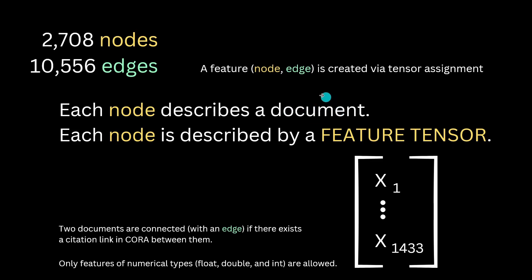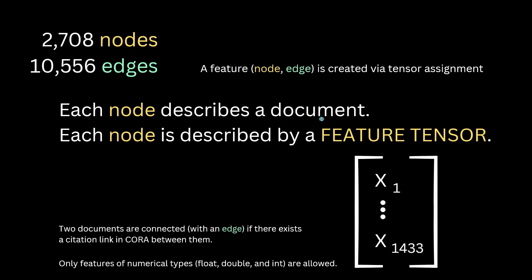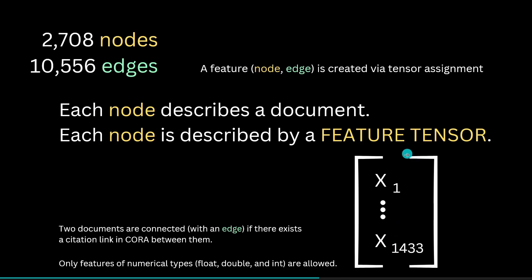A feature — either a node feature or an edge feature — is created via a tensor assignment. Each node in our Cora database is described by a feature tensor. How you can go from step one, where you have a document of say 20 scientific pages, to creating a feature tensor out of that document — this will be the content of my next video. We will operate with a 1433-dimensional feature vector on each of the 2,700 nodes. I'll show you how to prepare the data, run the model, and do the evaluation of your ML model in PyG. Note that only numerical feature types — float, double, or integer — are allowed in your feature tensor.